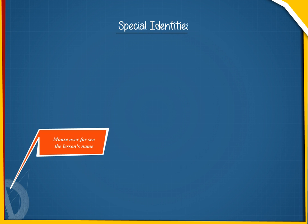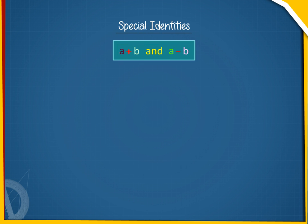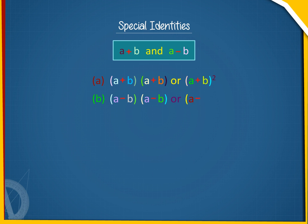Special identities. A plus B and A minus B are the two simple binomials. Multiplying each of them with itself and with the other, these three products are obtained: A) (A+B) into (A+B), or (A+B) whole square; B) (A−B) into (A−B), or (A−B) whole square; C) (A+B) into (A−B).